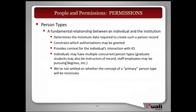We have the concept of a person type — really the relationship between the individual and the institution — which will help determine the context for how that individual will interact with KS. While there can be many different person types, our focus right now is really on the administrator, instructor, and student. Based on a person type, there must be a minimum amount of data required to create such a person, and that will change by type. There could also be multiple types for one individual — for example, a graduate student who might also be an instructor — and these may change over time.